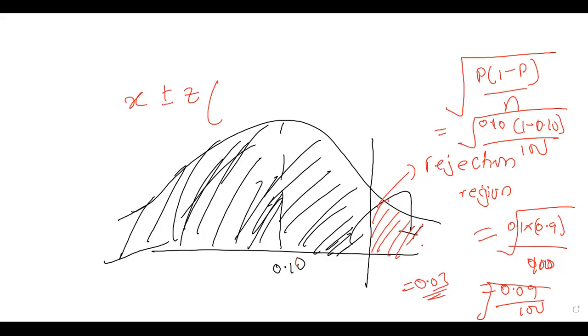So 1.645 times 0.03. We are looking for the upper limit. The upper limit would be 0.1 plus everything here. So the answer would be 0.149.